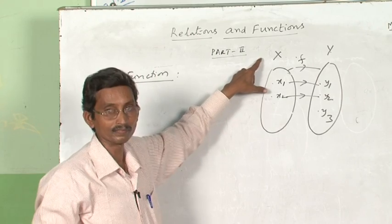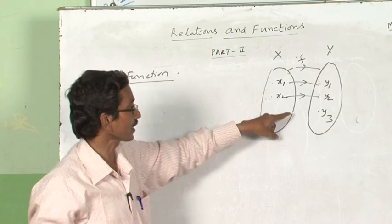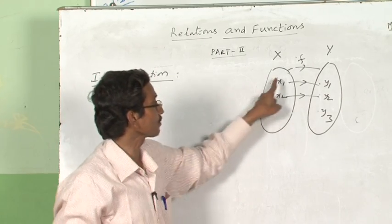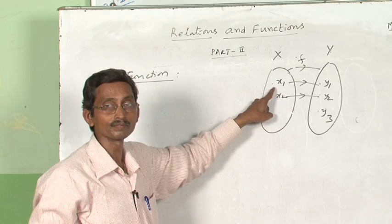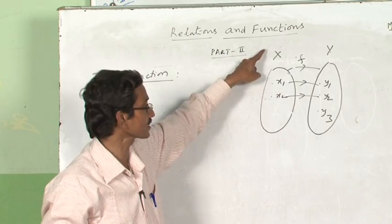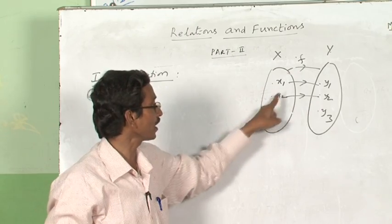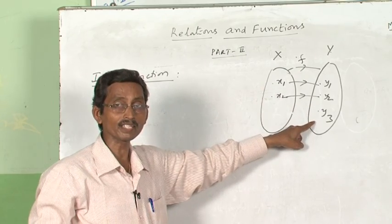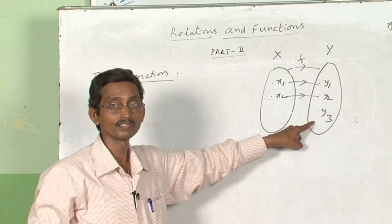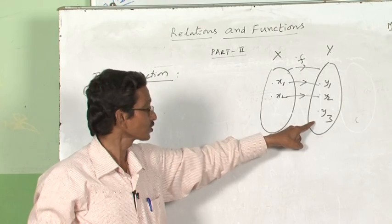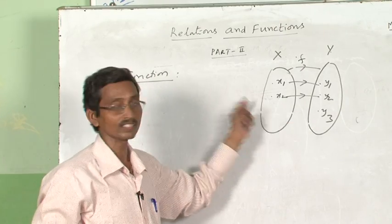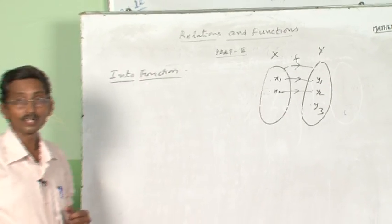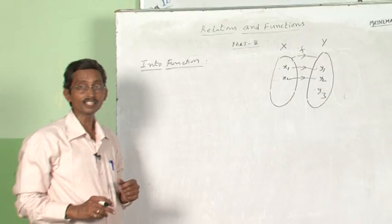Consider pre-images in X. See the diagram. Y1 has pre-image X1 in the set X, and Y2 has a pre-image. But does Y3 have any pre-image? No. So it is not an onto function clearly.